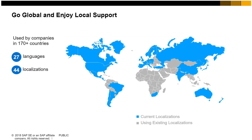SAP Business One is used by customers in over 170 countries around the world in 27 languages. While SAP provides 44 localizations for the product, partners have adapted these localizations to fit the needs of many other countries. Customers can go global while receiving support from partners that have deep local knowledge and expertise.